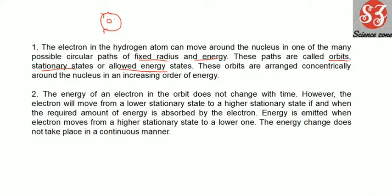The energy of an electron in an orbit does not change with time. As long as the electron is revolving in its orbit, it will not change its energy and will not change its orbit.